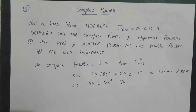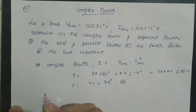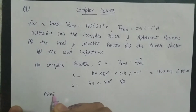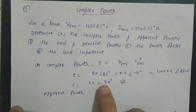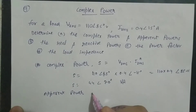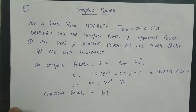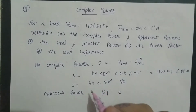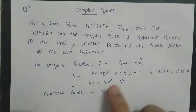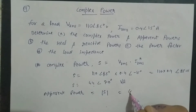Next पूछा गया apparent power। अगर हमने complex power निकाल लिया तो apparent power होता है mode of complex power। Mode निकालने के लिए angle को neglect करते हैं, बाकी जो part बचता है वो mode value होती है। तो apparent power = 44 volt-ampere।